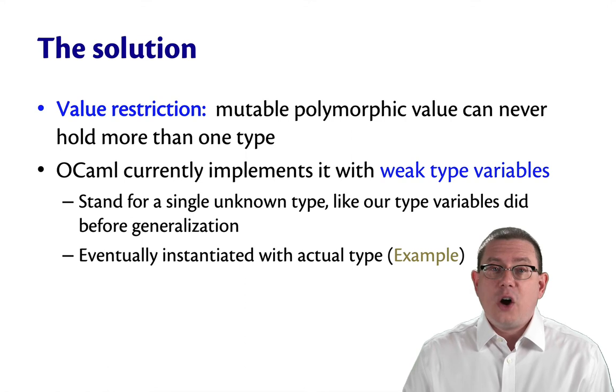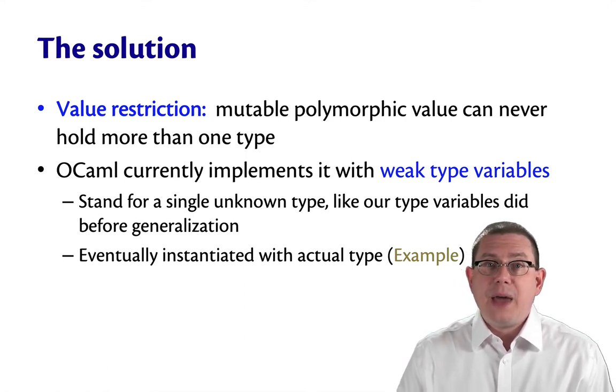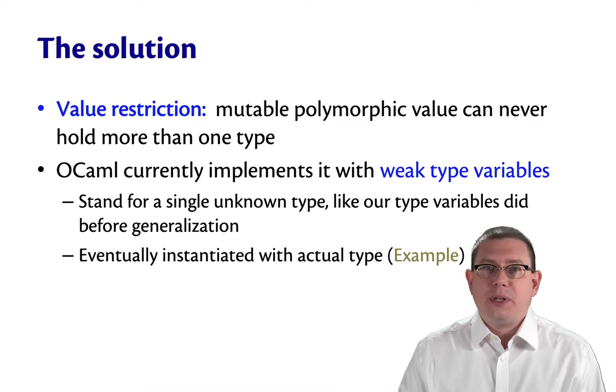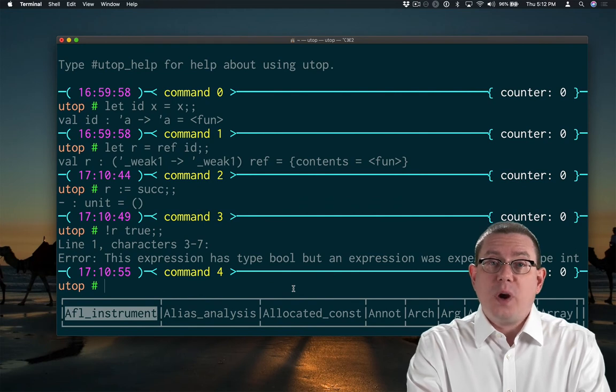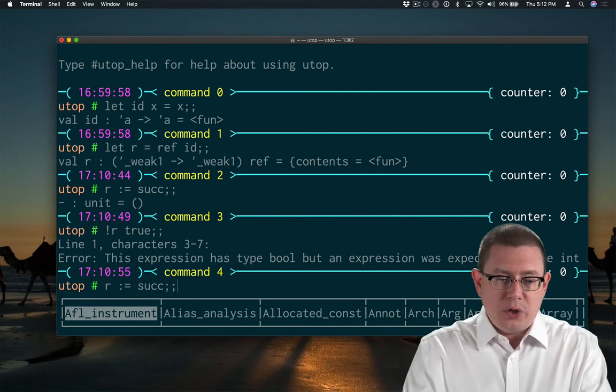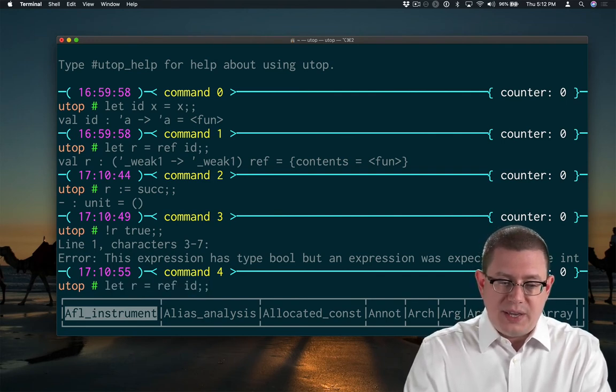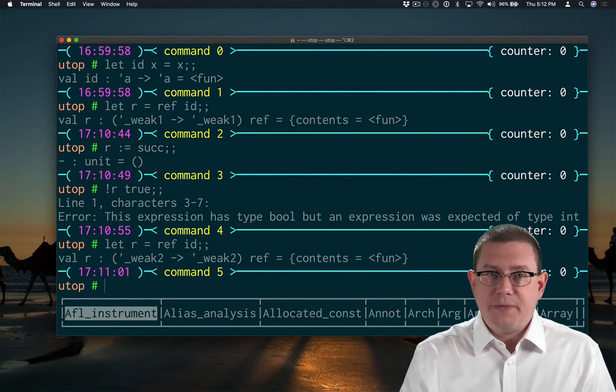Eventually, a weak type variable is instantiated with the actual type, and from then on is not a type variable anymore because it's been instantiated once and for all. Going back to our code here, let's look in more detail at something that happened with the types. So when I bound r as a ref to id, it got a type involving a weak type variable.